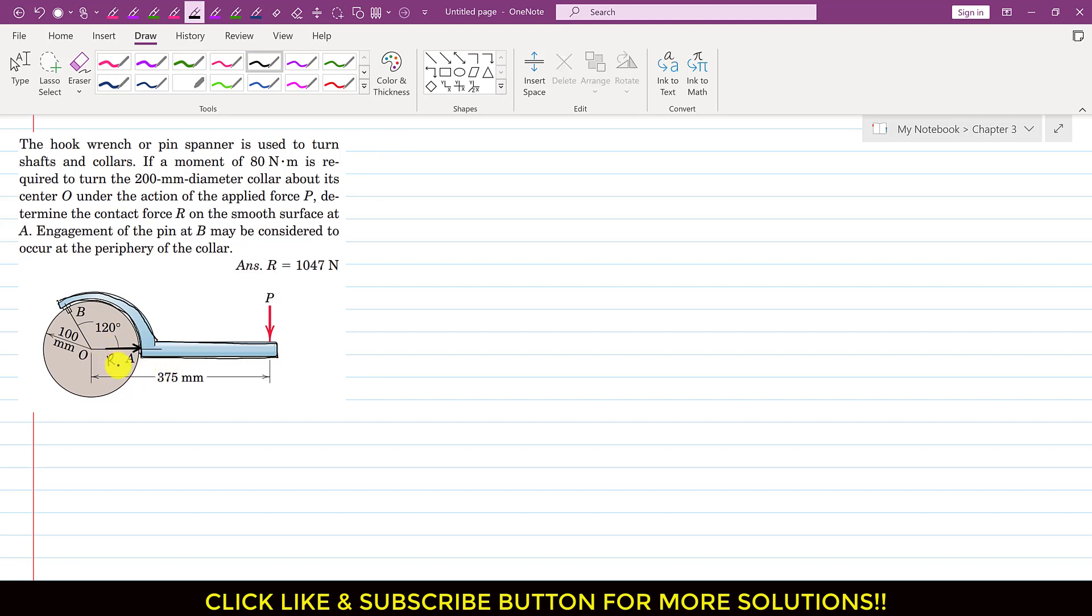So this collar will apply the force in this direction. Let's say that this force is known as R. And similarly, this collar will apply some force at point B in this direction on this spanner. So let's say that this force is FB. So let me draw the free body diagram. This is our free body diagram. And here we have that force P which is acting vertically downward.